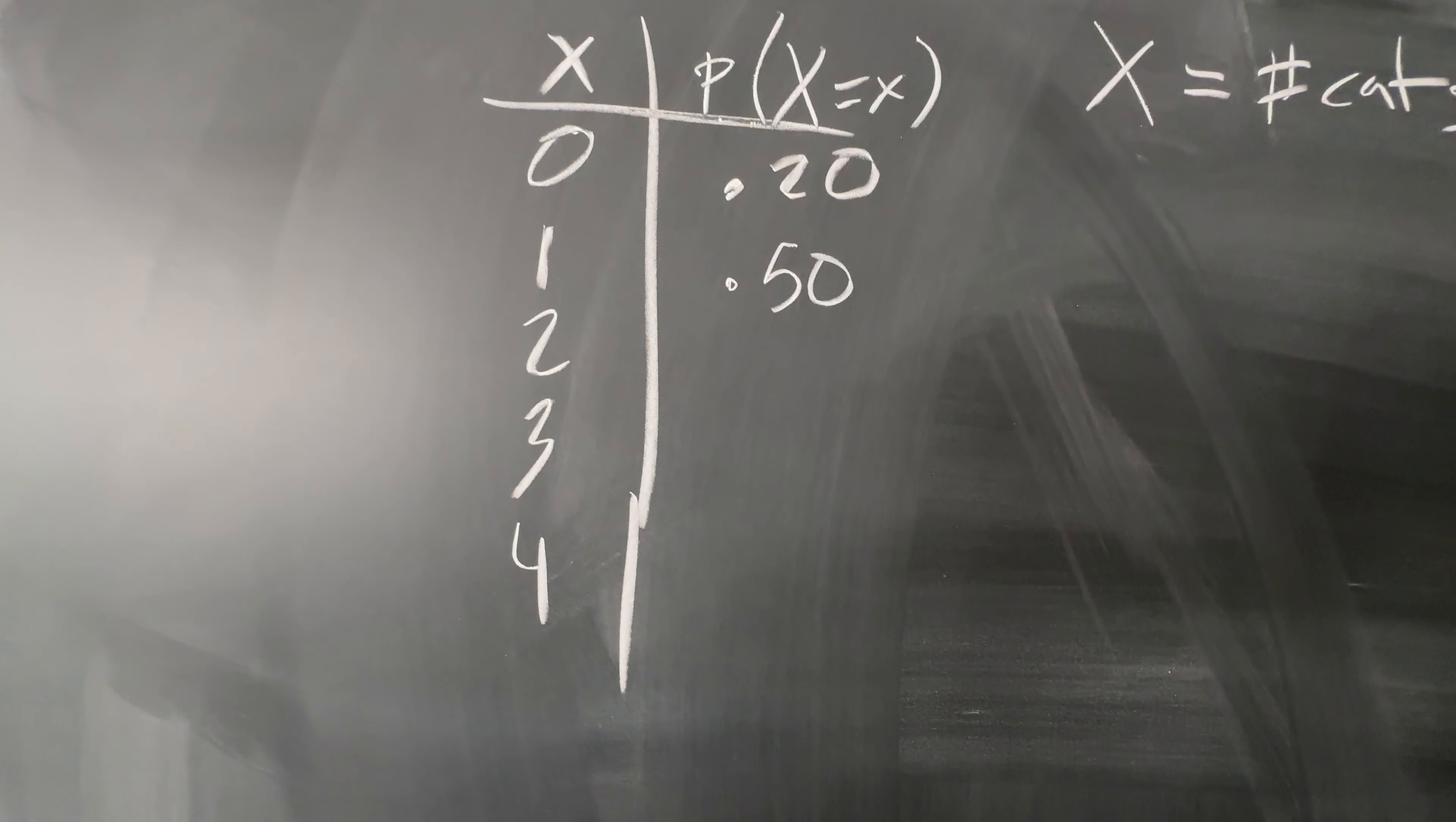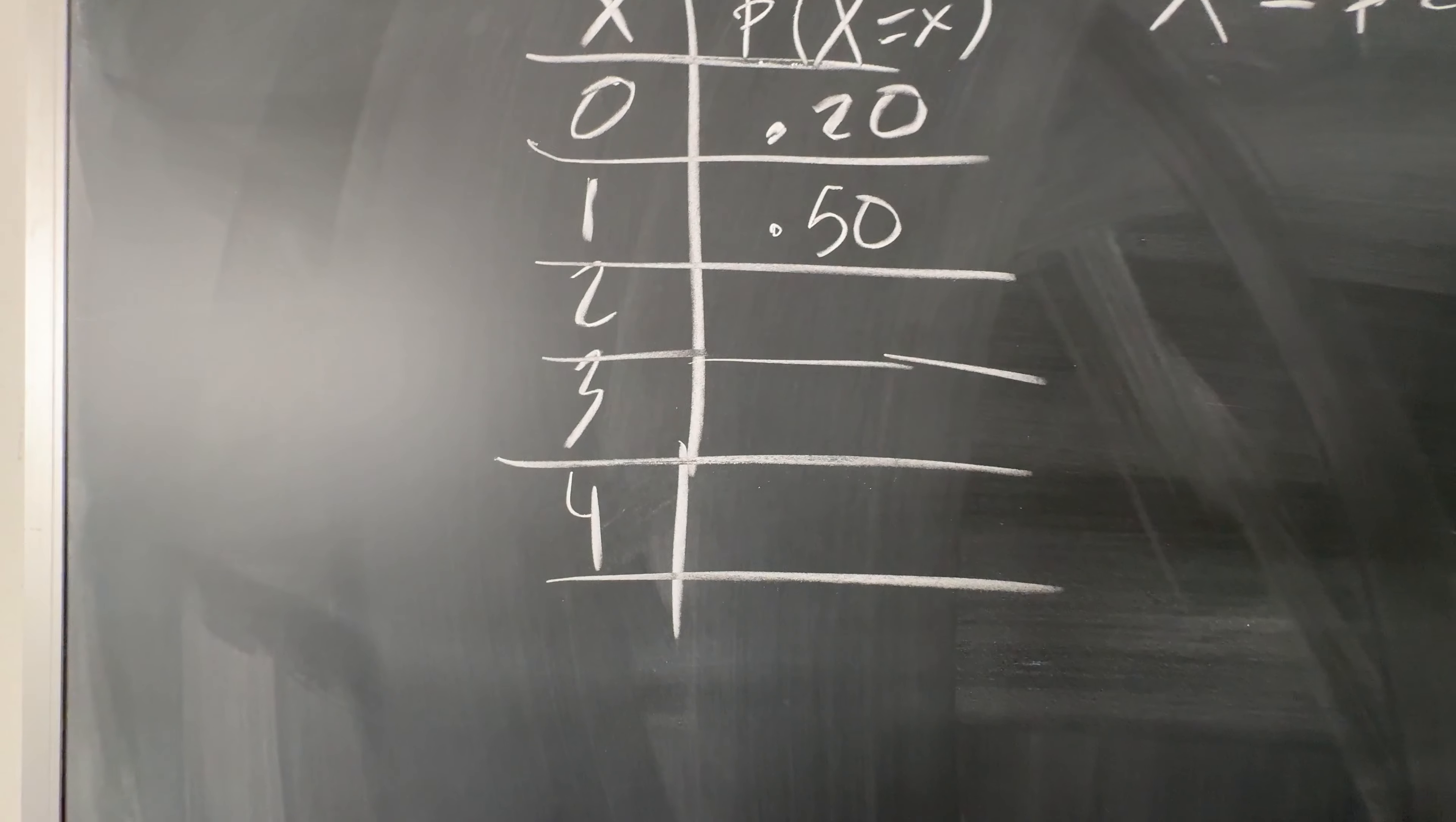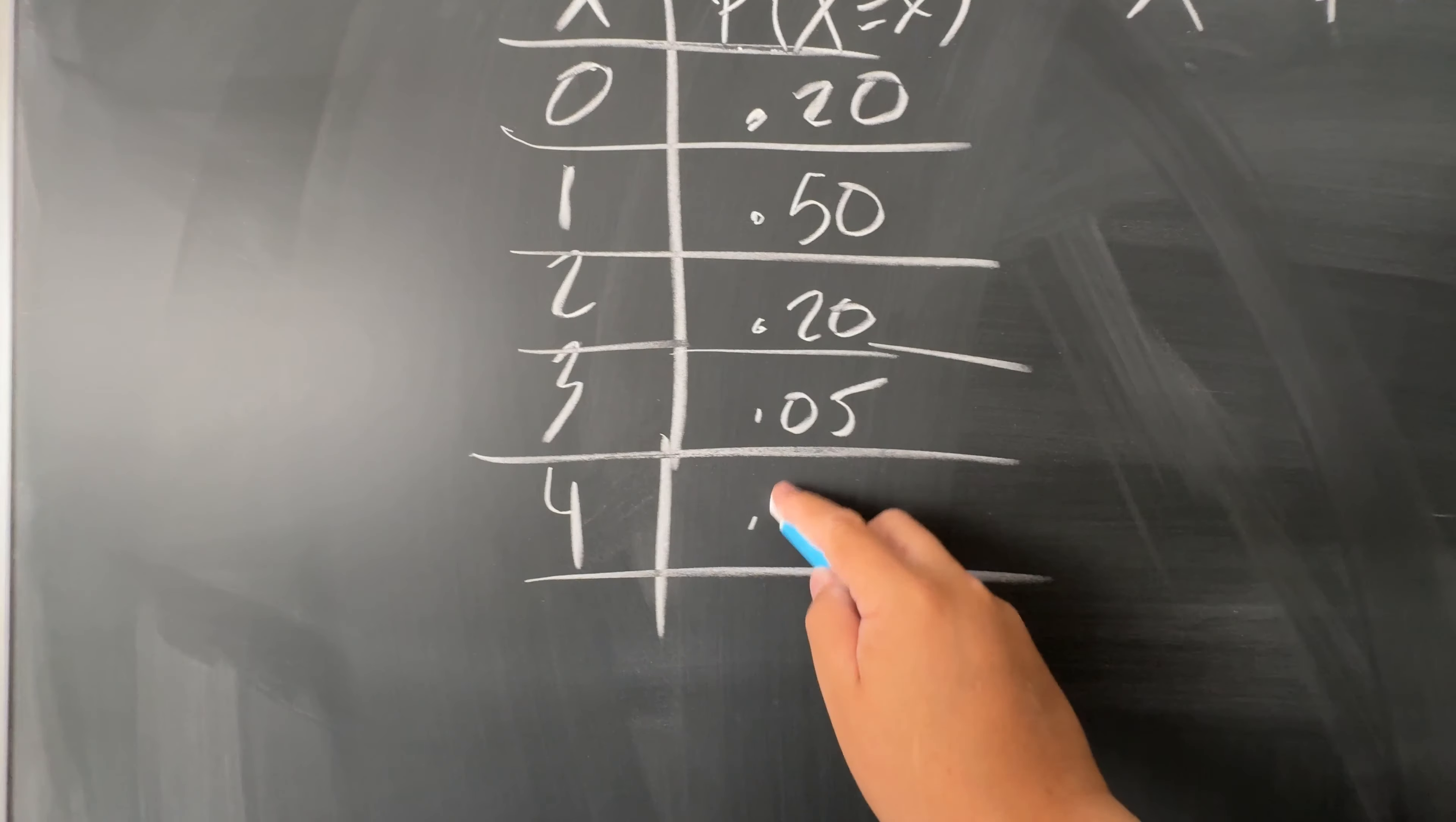And probability of two cats, let's say 0.20. And then probability of three cats, 0.05. And probability of four, let's say 0.05. So, I'm making these numbers up.